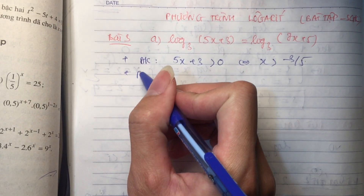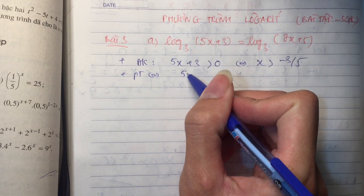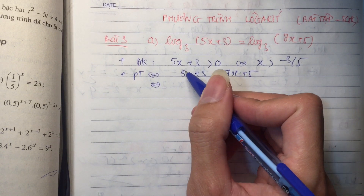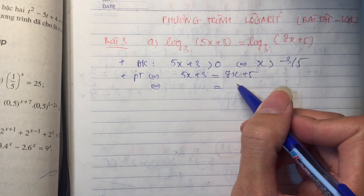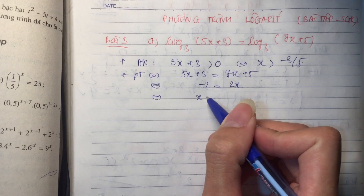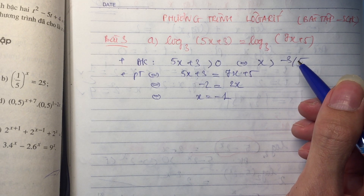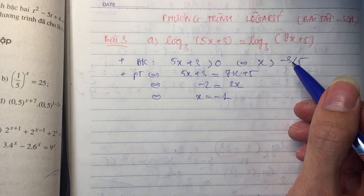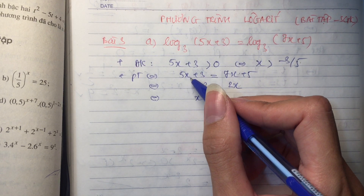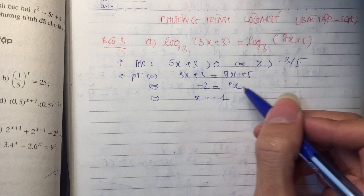Sau đó phương trình này tương đương với: 2 cái này bằng nhau thì bỏ logarit đi, 2 bên bằng nhau là xong. Thế thì 5x cộng 3 sẽ bằng 7x cộng 5. Các em chuyển vế thì bỏ 5x đi, bên này còn 2x. Bên kia 3 trừ 5 thì là âm 2. Có nghĩa là x bằng âm 1. X bằng âm 1 em xem có thỏa mãn lớn hơn âm 3 phần 5 không?